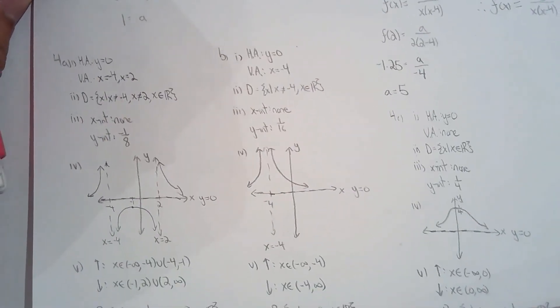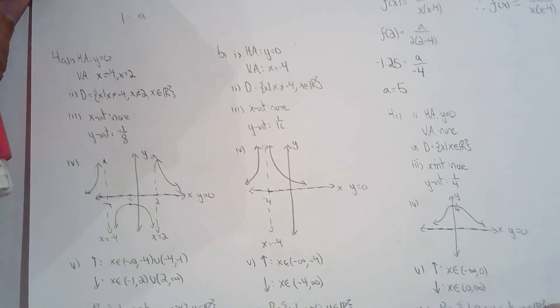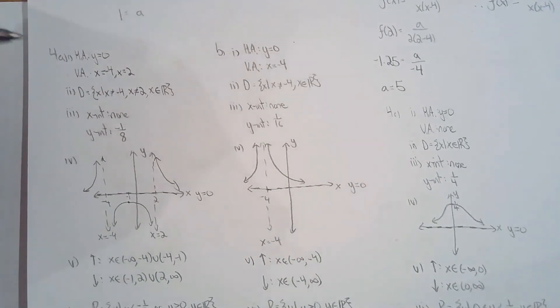And then for question 4, they gave me lots of different functions, and they asked me for basically everything. Equations of asymptotes, domain, x-intercept, y-intercept, sketch it, when is it increasing, when is it decreasing, when is it positive, when is it negative, give me the range, so it was basically everything.